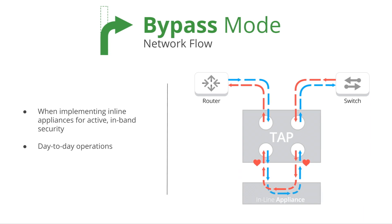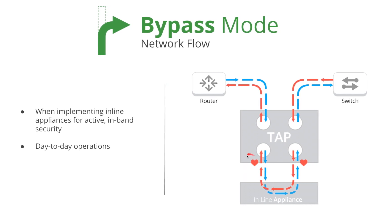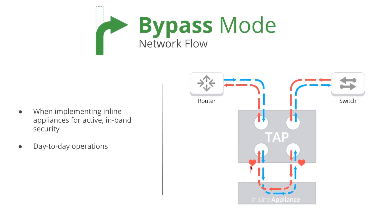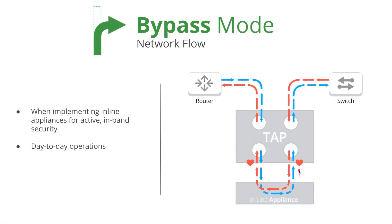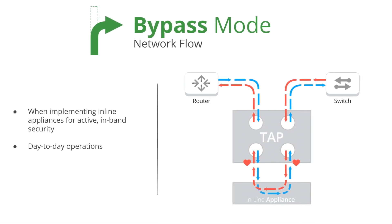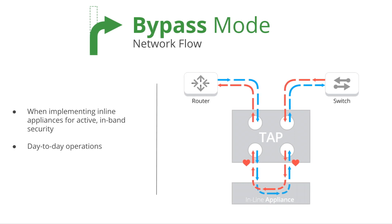You may have noticed the heart icon. The bypass tap passes a heartbeat signal back and forth between the devices to tell us the health of the inline appliance and prevents it from becoming a point of failure within the network. This is critical for managing updates and troubleshooting your network.